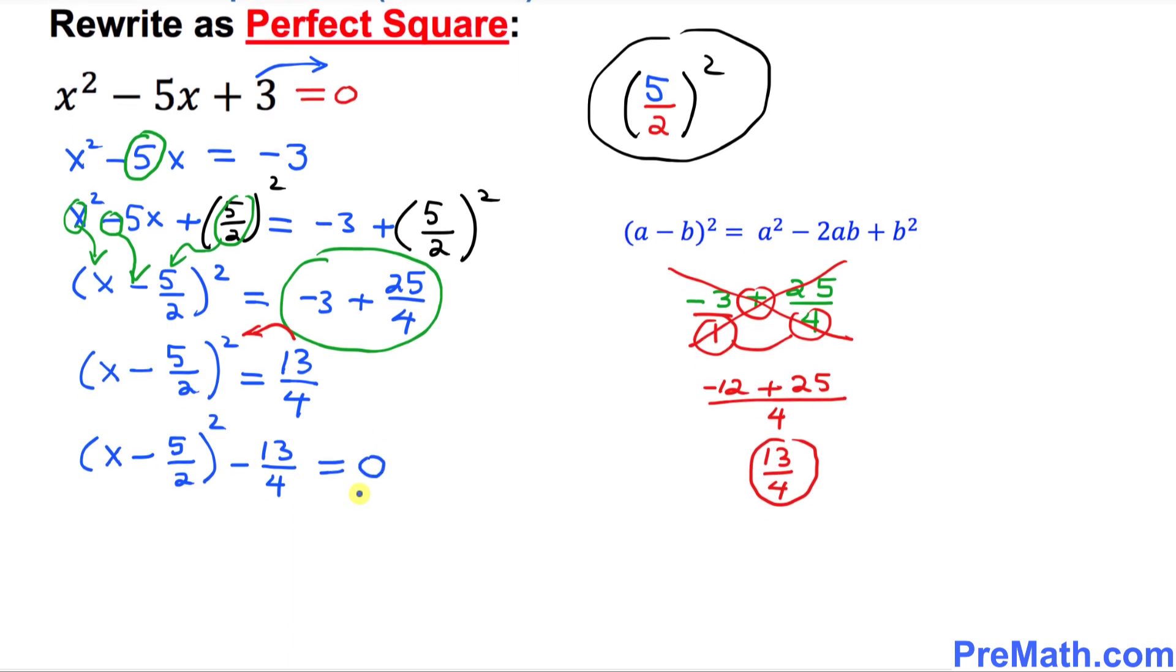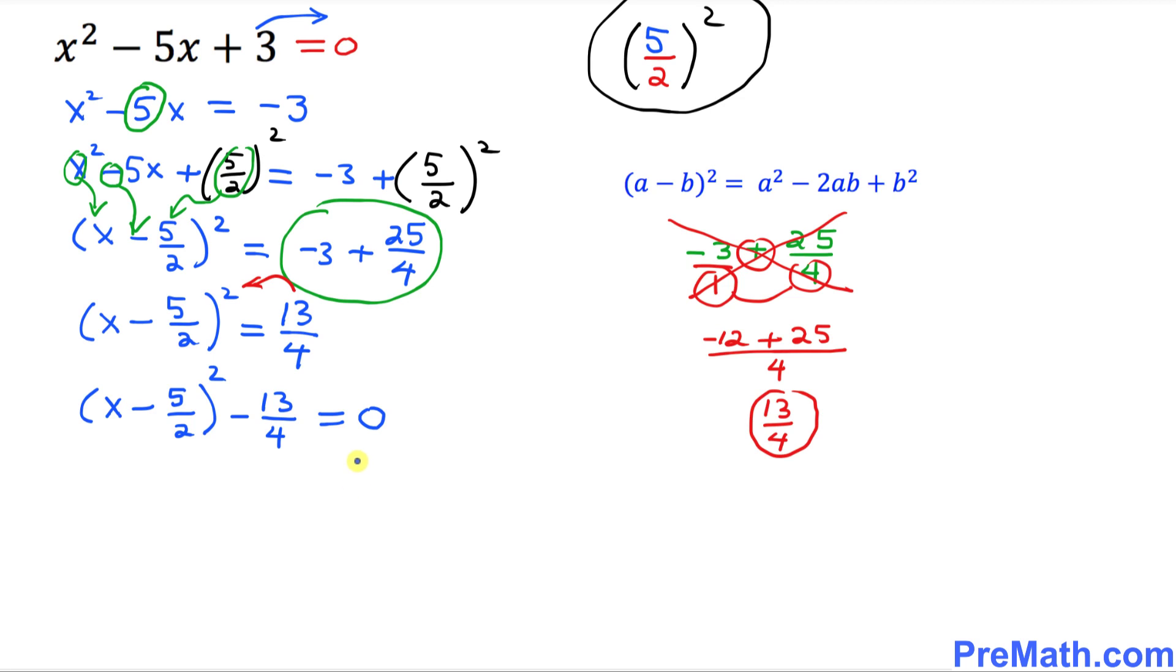So far so good. So the next step that we are going to do is I want you to disregard this 0. We no longer need this one. Simply, I am going to write down this part only.